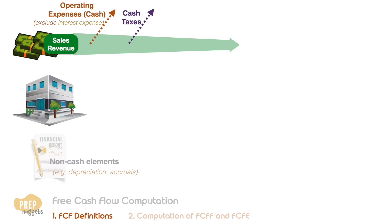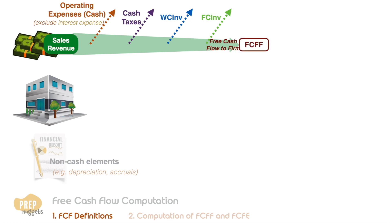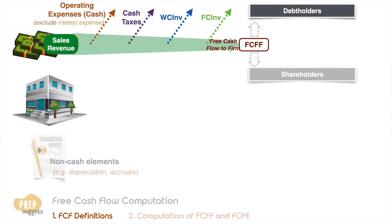The leftover cash is used to make short-term net investments in working capital and long-term investments in PP&E, which we call fixed capital investments. The remaining cash is called free cash flow to the firm, because it's free to pay out to the firm's investors — that is, both debt holders and shareholders.